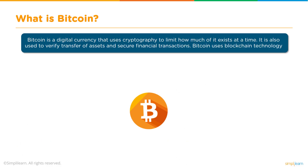What is Bitcoin? Bitcoin is a digital currency that uses cryptography to limit how much of it exists at a time. It is also used to verify transfer of assets and secure financial transactions. Bitcoin uses blockchain technology, and there is a limit to the supply of Bitcoin — only 21 million are bound to be supplied in the network. As of today, around 16.5 to 17 million have already been mined and are available for transactions.